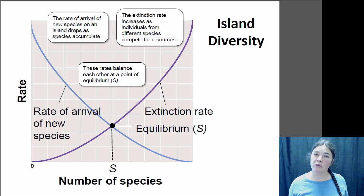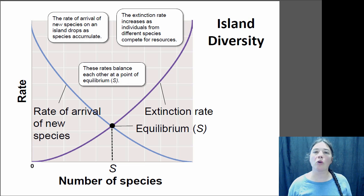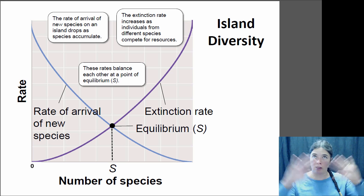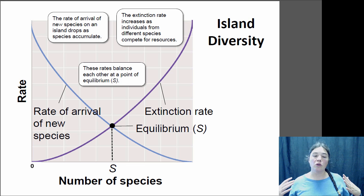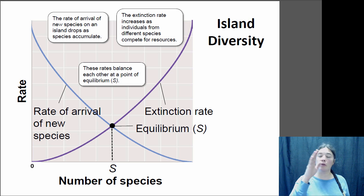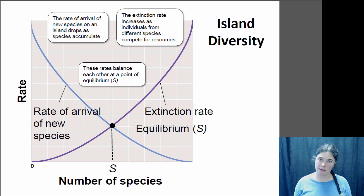At the same time, when you have more species on an island, the extinction rate increases, because chances are good that two of those species are going to be competing for resources and one will drive the other locally extinct — not global extinction, just on the island. So you can predict the number of species on the island to be the point where the number of new species arriving per year equals the number going extinct per year. That's the equilibrium point.